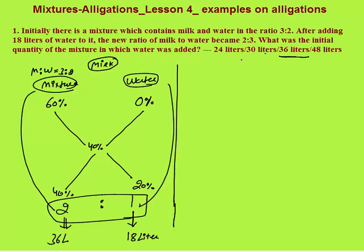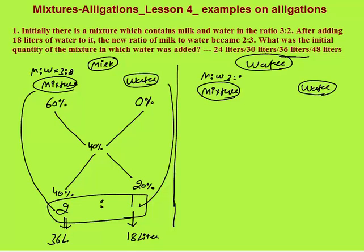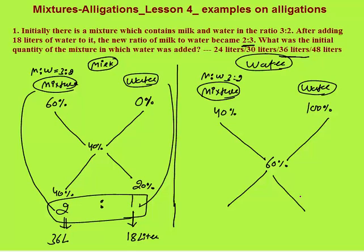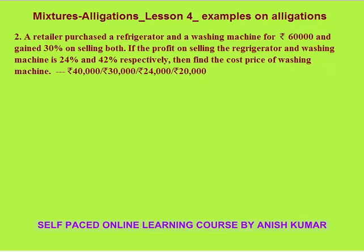You can also apply the water allegation. We are mixing mixture and water. Milk and water in the mixture is in ratio 3 is to 2, so water concentration in mixture is 40 percent — 2 by 5. Water contains 100 percent water. By mixing, the final solution has milk to water ratio 2 is to 3, so water would be 3 by 5, that is 60 percent. Again subtract diagonally: 100 minus 60 gives 40 percent, 60 minus 40 gives 20 percent. The ratio is again 2 is to 1 — the answer is still the same.